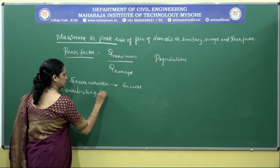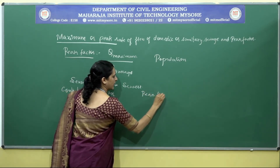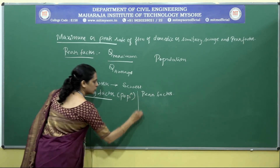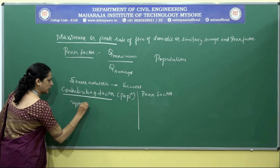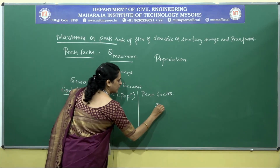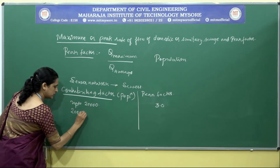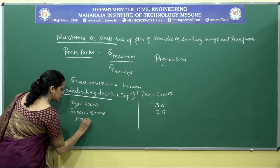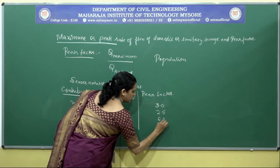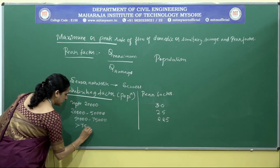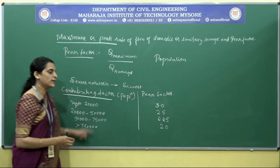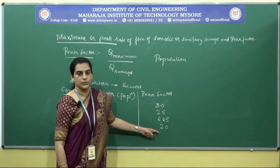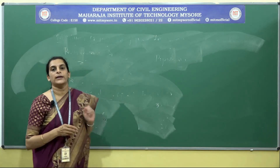The contributing factor here is population density. Up to 20,000 population the peak factor is 3; from 20,000 to 50,000 it is 2.5; from 50,000 to 75,000 it is 2.25; and above 75,000 it is 2. With the increase in density of population, the peak factor reduces. The peak factor can be calculated using empirical formulae.